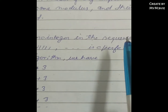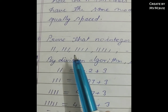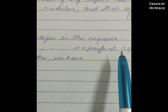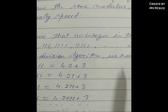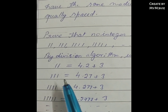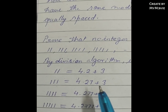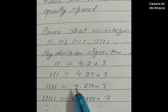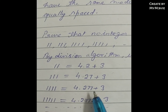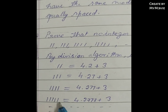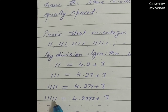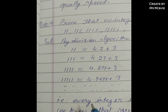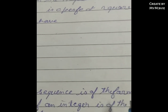Prove that no integer in the sequence 11, 111, 1111, 11111, and so on is a perfect square. By the division algorithm, we have: 11 = 4×2 + 3, 111 = 4×27 + 3, 1111 = 4×207 + 3, and 11111 = 4×2777 + 3, and so on.